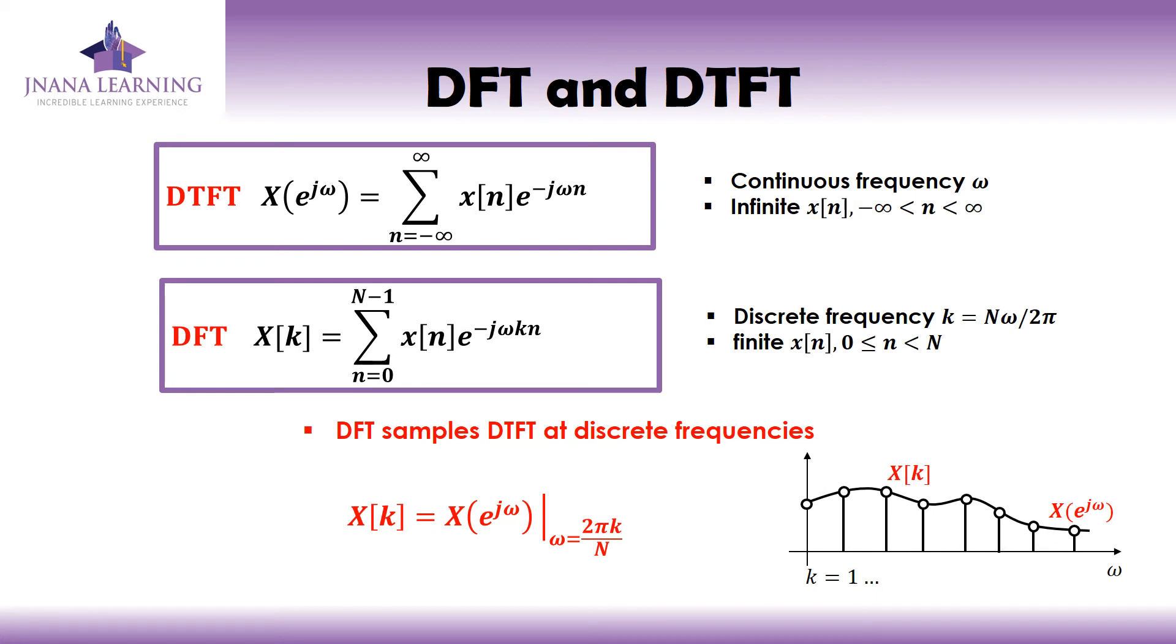Actually, we can say that DFT samples DTFT at discrete frequencies. In the figure shown there, you can see how the signal is sampled and how we are getting the value for X[k]. We can see that X[k] equals X(e^jω) at ω equals 2πk/N. So that is the difference between DFT and DTFT.